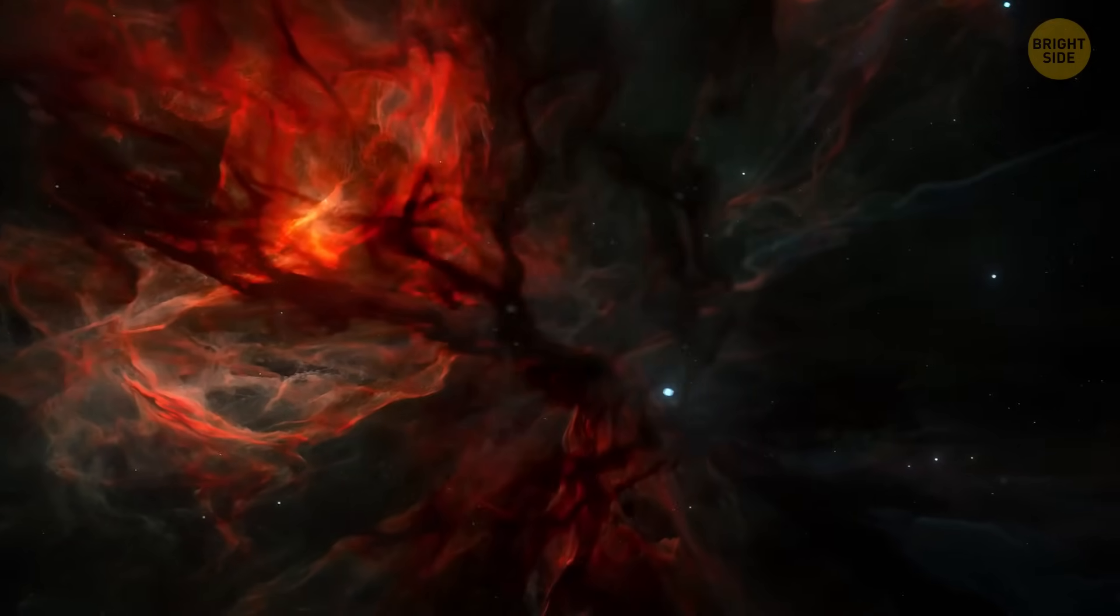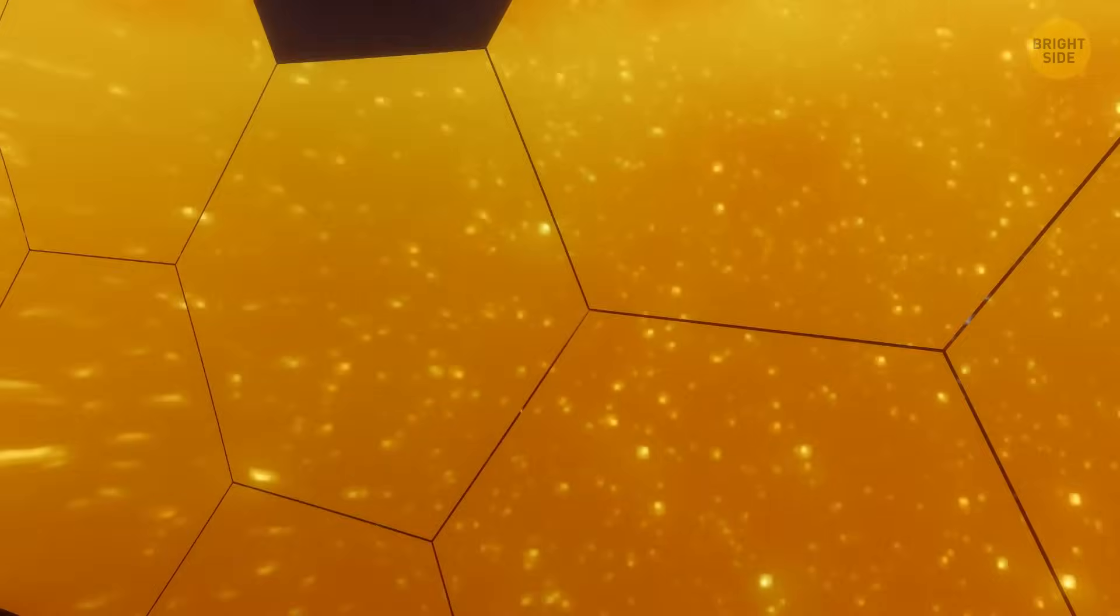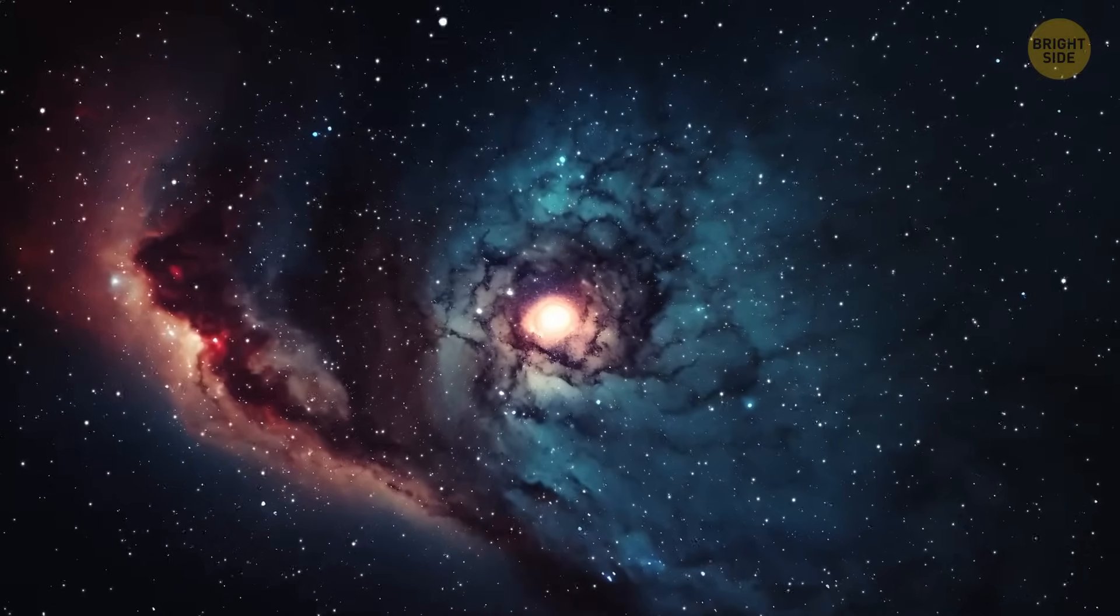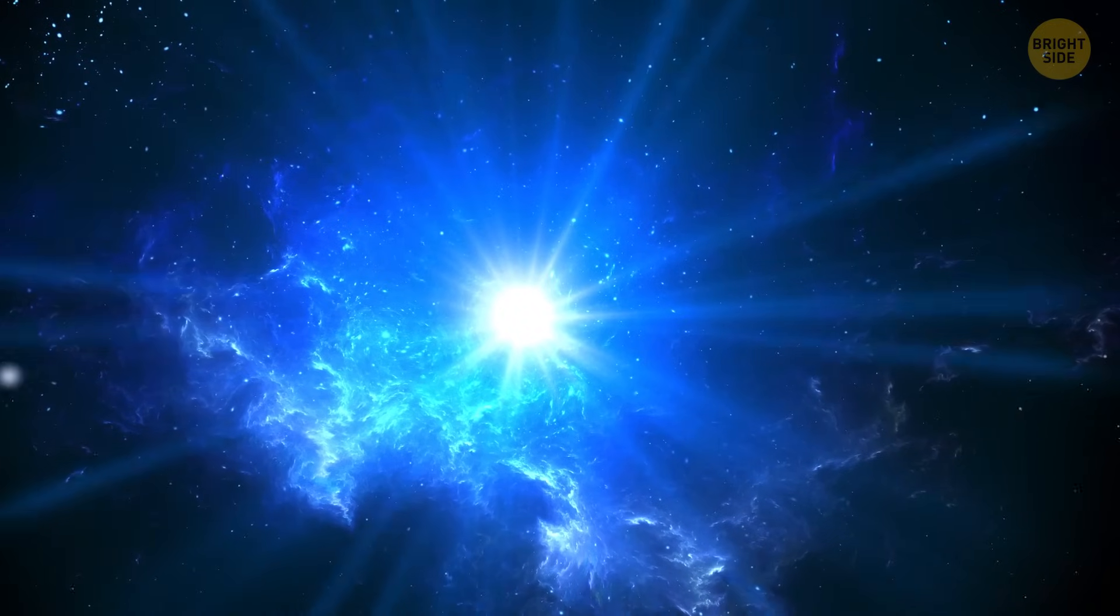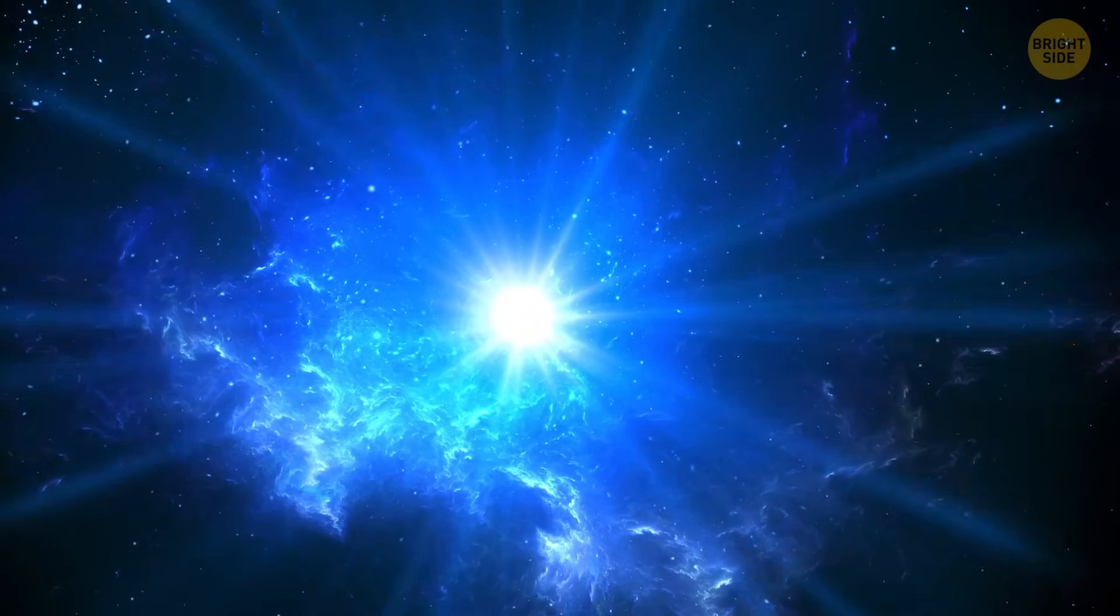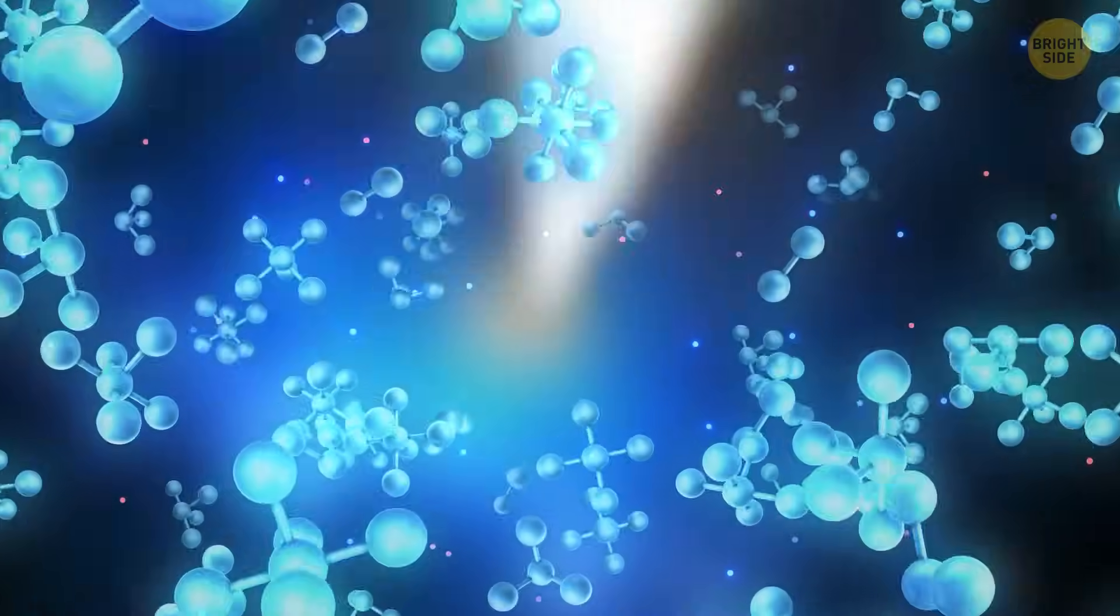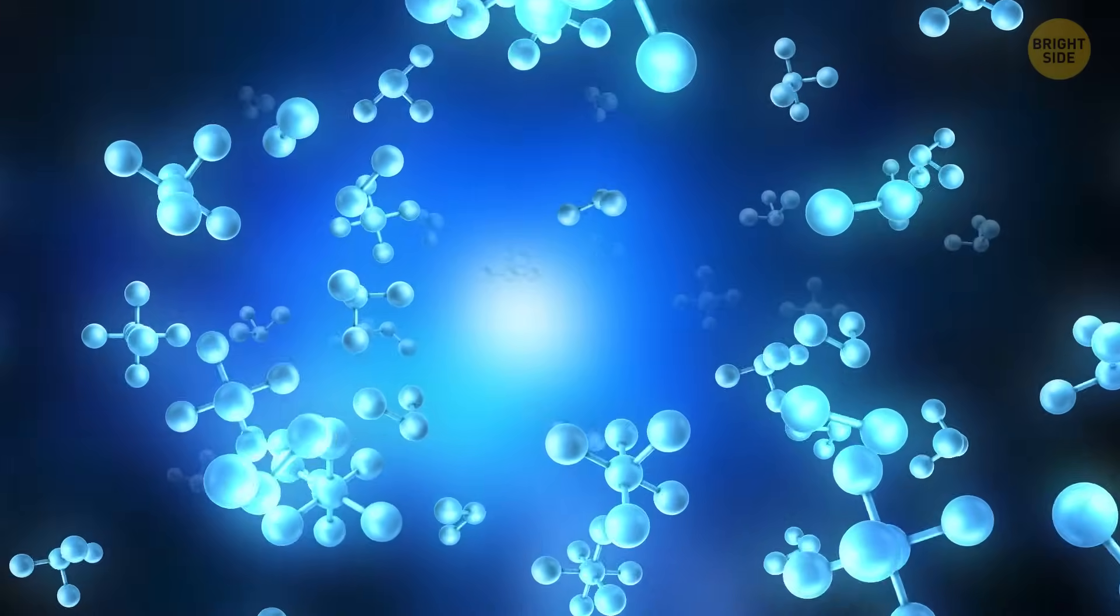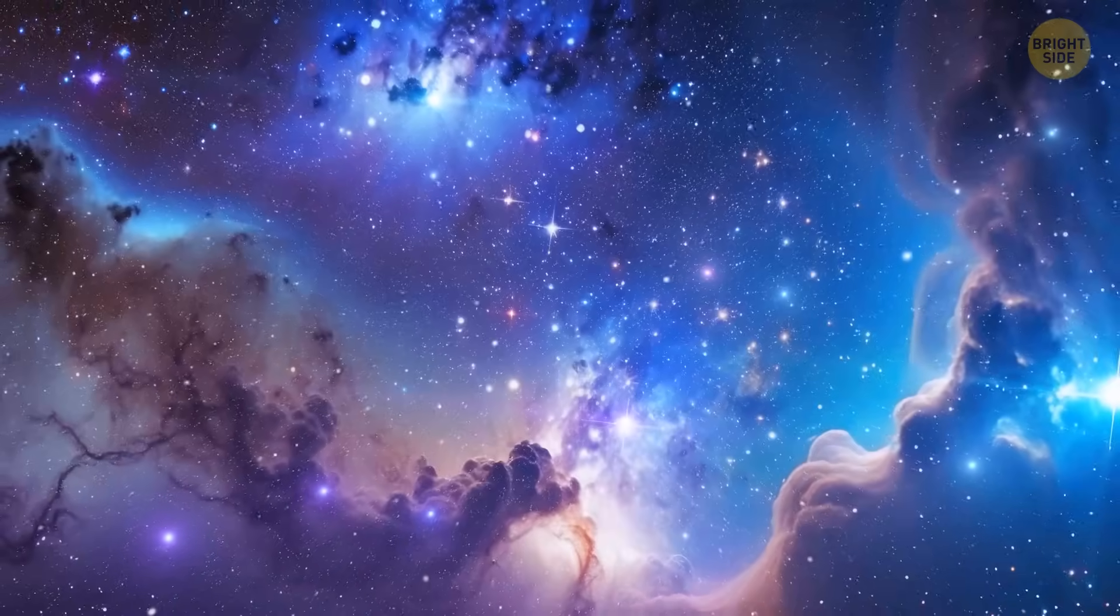Then, everything changed. Recently, the James Webb Space Telescope has spotted ancient dwarf galaxies from that epoch. Turns out, they're the ones we should be thanking for lighting up the universe. Back then, they were filled with early stars. These stars emitted tons of radiation that was so powerful that it managed not to just overcome, but break apart the hydrogen atoms in the fog. It turned them into charged particles, like particles that carry a little bit of electricity, called ions. Little by little, the fog was cleared away.